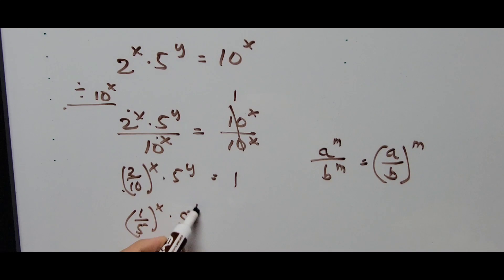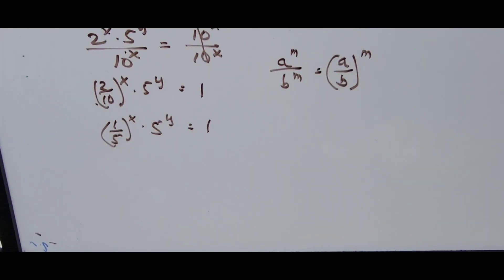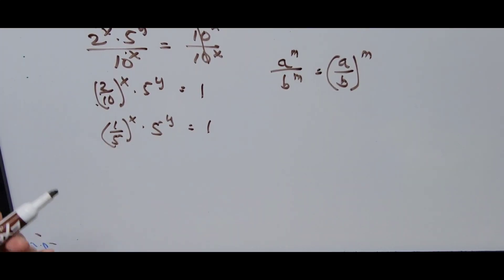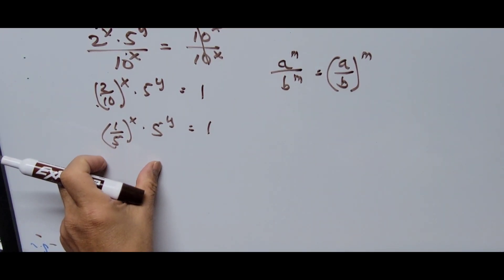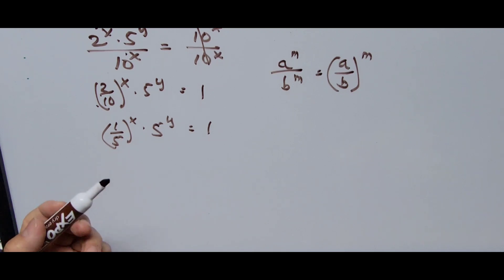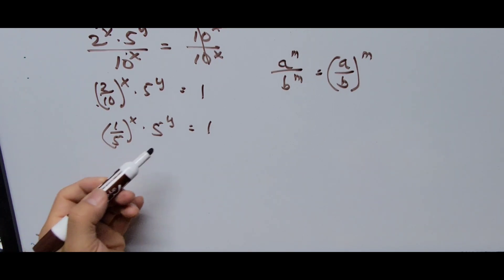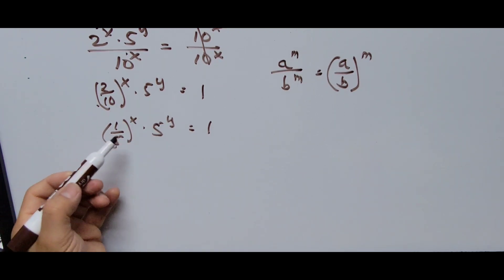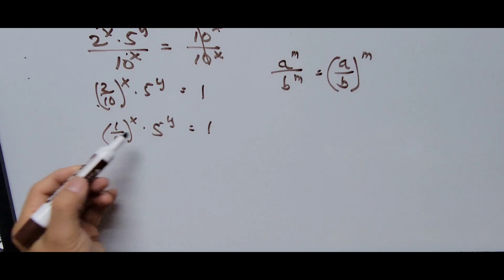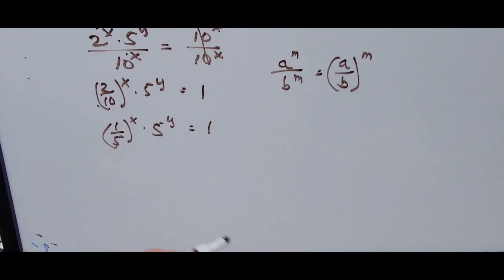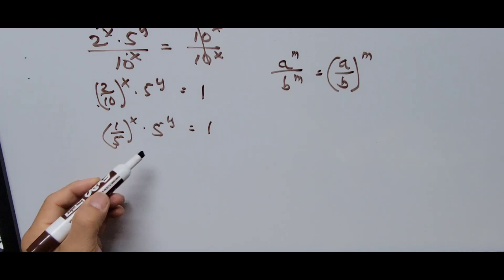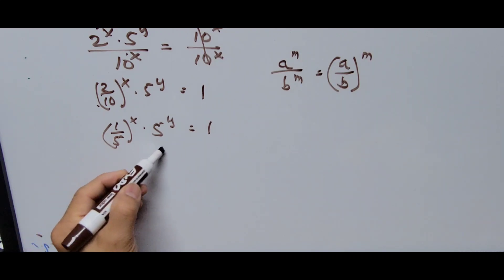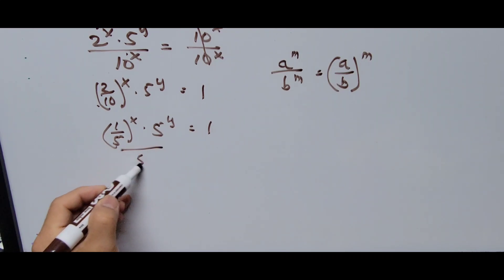The variables are now on one side of the equation. The next step is to separate or isolate x and y. We divide the whole equation on both sides by 5 raised to the power of y.